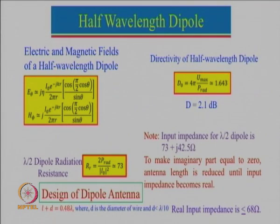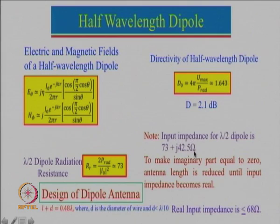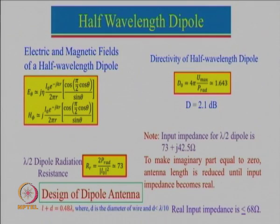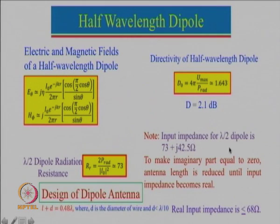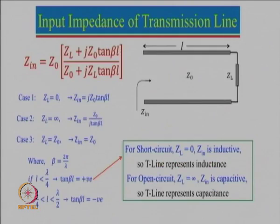As far as input impedance is concerned, the dipole radiation resistance is 73 ohms. Several books say the input impedance for a λ/2 dipole antenna is 73 + j42.5 and still call it a resonant length λ/2. That is not really correct. If the dipole is a resonant configuration, the impedance should be real — resonance is where the reactive part becomes zero. But for a λ/2 dipole antenna the impedance is 73 + j42.5. So where is the problem? The issue is that when the length equals λ/2, the half-length is λ/4.